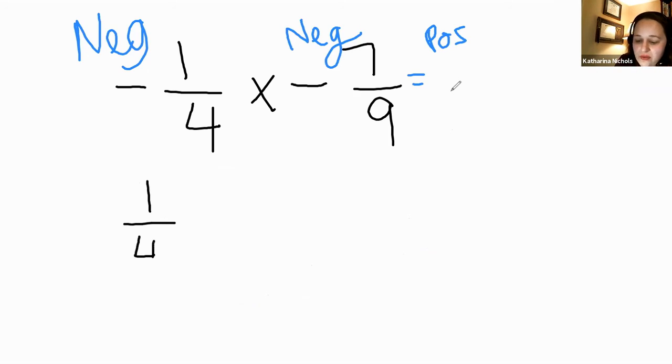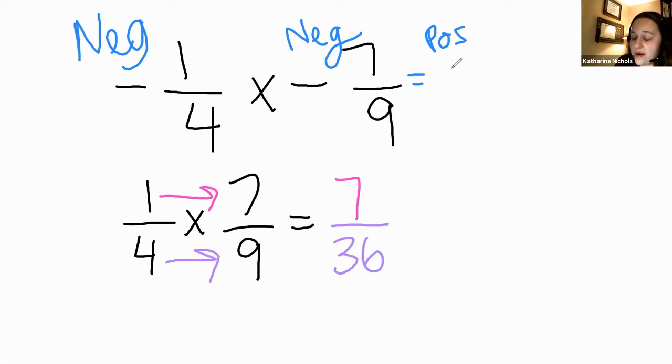I'm taking one-fourth times seven-ninths and I can multiply straight across the numerator and straight across the denominator. One times seven in the numerator gives me seven and four times nine in the denominator gives me 36. Therefore, my product is positive seven thirty-sixths.